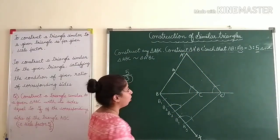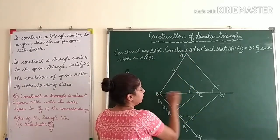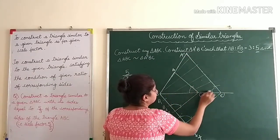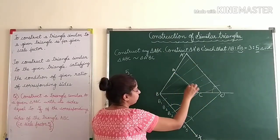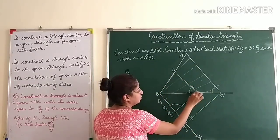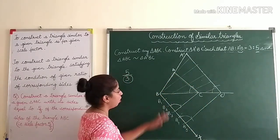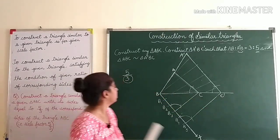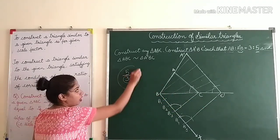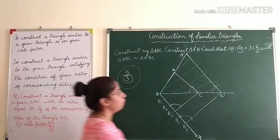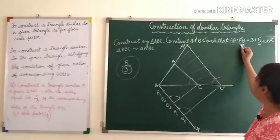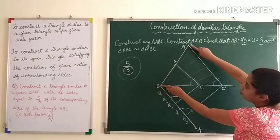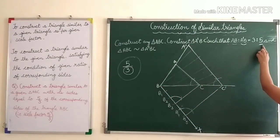This intersection point on the extended line is A'. We now have triangle A'BC'. This big triangle is bigger than the original triangle ABC. You can see that AB : A'B is 3 : 5, confirming the scale factor of 5/3.